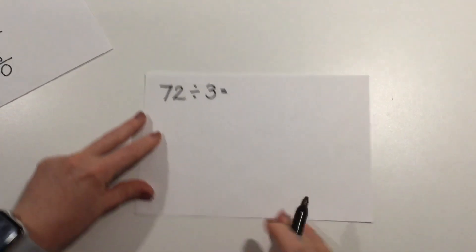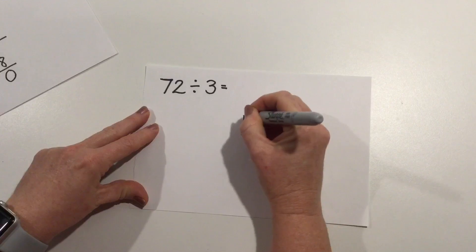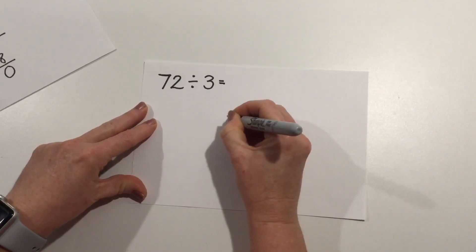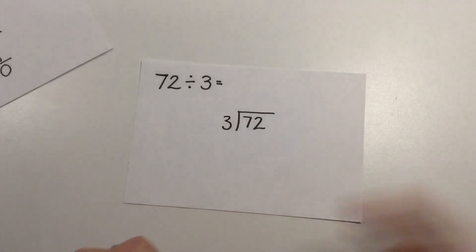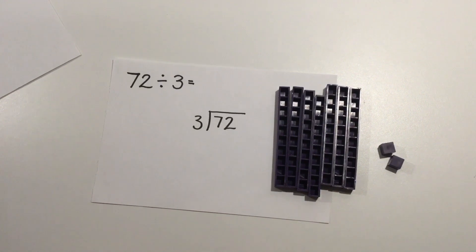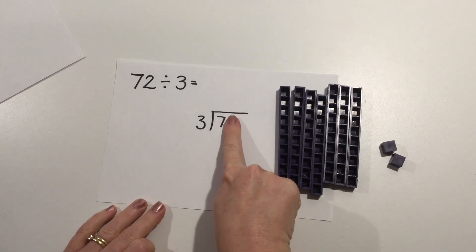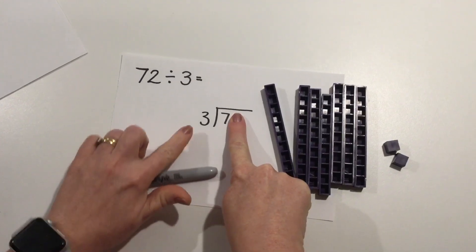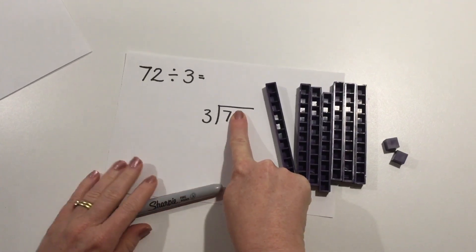My next example is 72 divided into groups of 3. So I've got my 72. First of all I'm going to ignore my ones and I'm going to say how many groups of 3 can I make if I've got 7 tens?